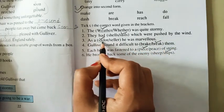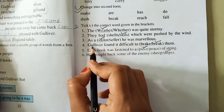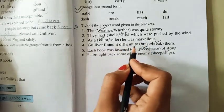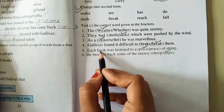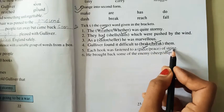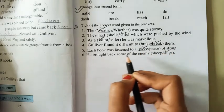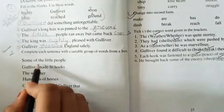As a sailor, he was marvelous. Gulliver found it difficult to break them. Each hook was fastened to a piece of string. He brought back some of the enemy ships. This is your homework for today.